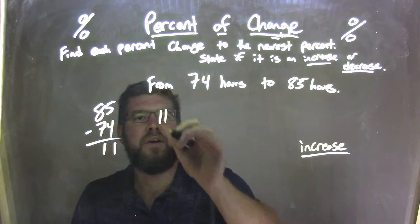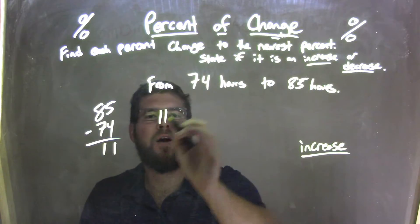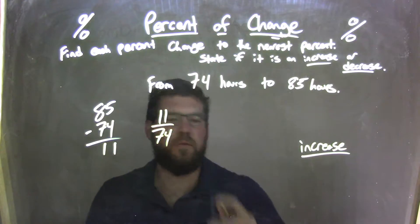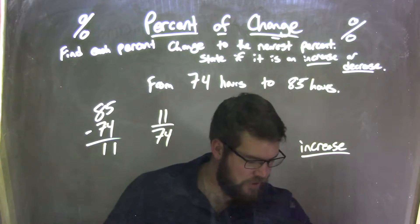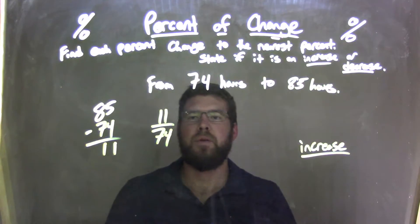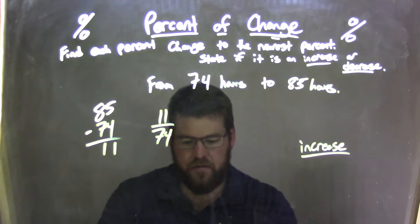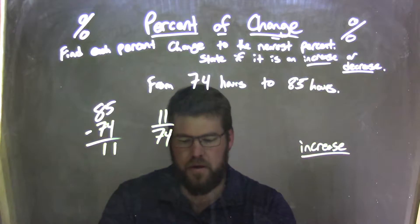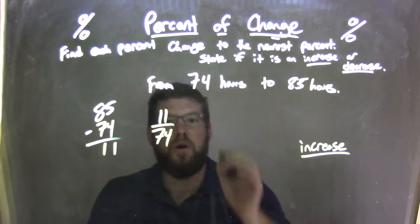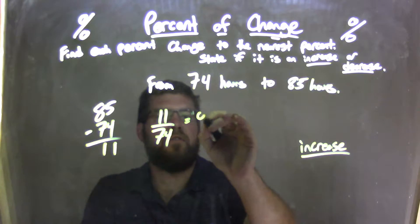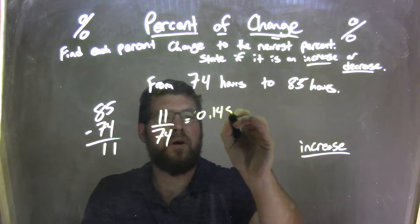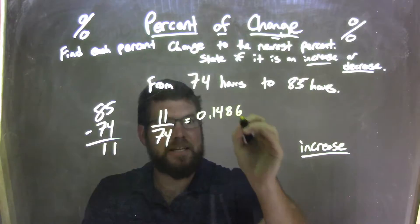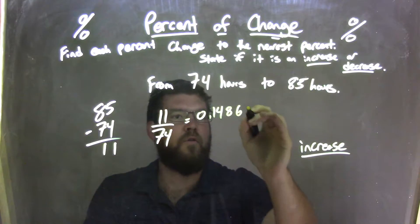We take that 11, and we divide it by our first number, which is 74. If that is a fraction here, I'll use my calculator. So, we have 11 divided by 74, comes out to be 0.14864.